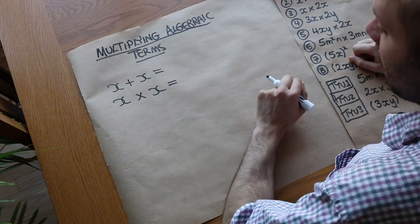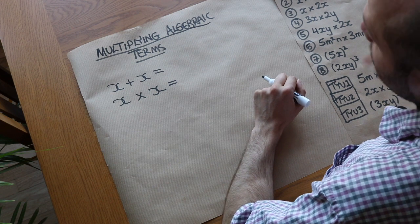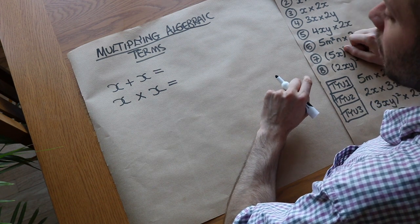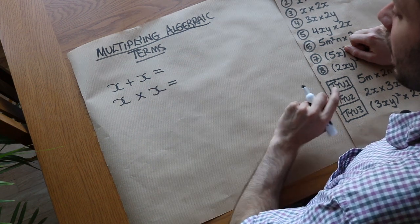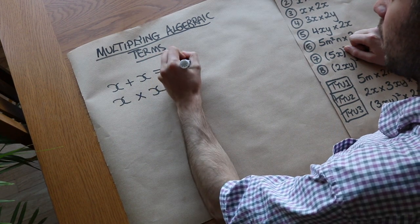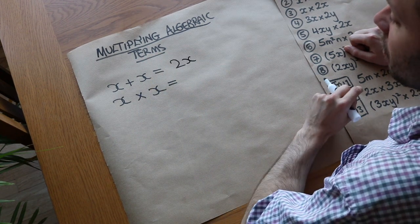We've got x plus x, and we've got x times x. In the previous video, we saw how we could collect like terms. So if you have one lot of x, and you add another lot of x, then you would have two lots of x, and you just write that as 2x.